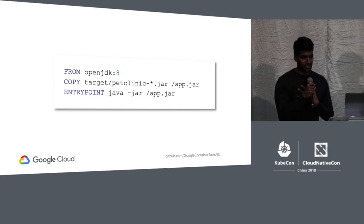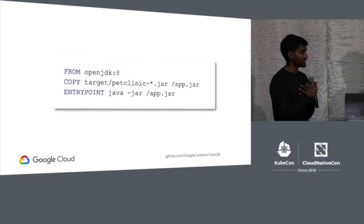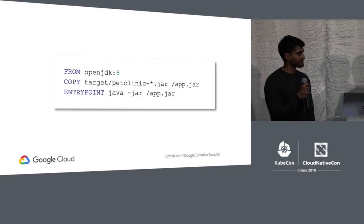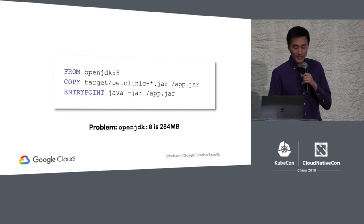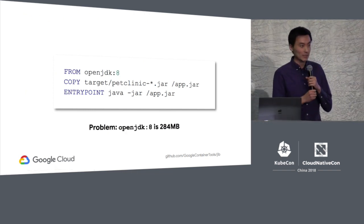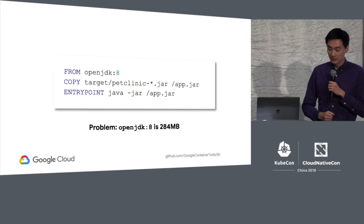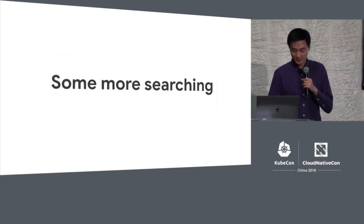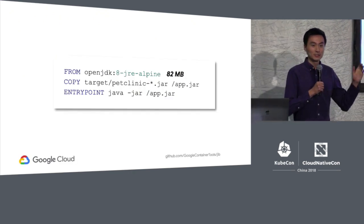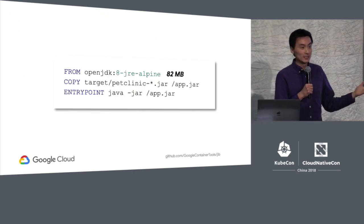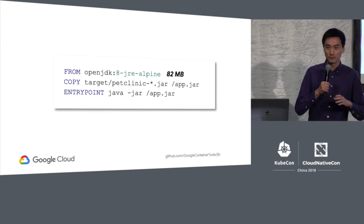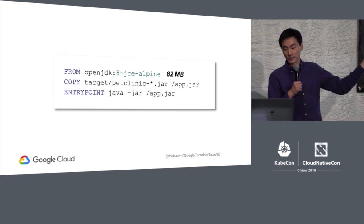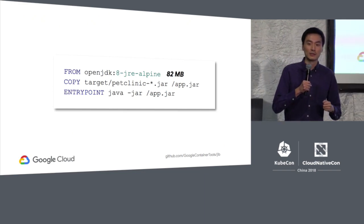However, when I did this build on my machine, I found my container image was 300 megabytes — a lot for a simple Java application. The OpenJDK base image is 284 megabytes by itself, making my entire image over 300 megabytes. Searching further, I find I can use the Alpine version of OpenJDK. Alpine is a tiny Linux distribution, only about four megabytes, and I'm using just the JRE version, so the base image is only 82 megabytes, making my entire image a lot smaller.